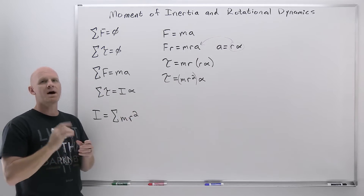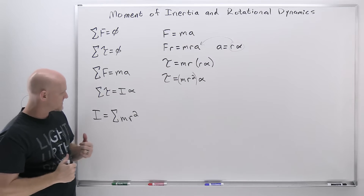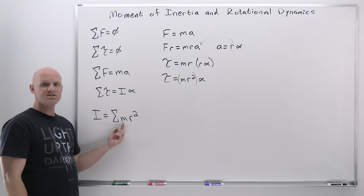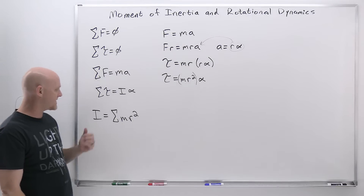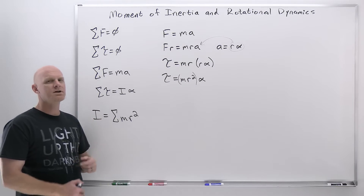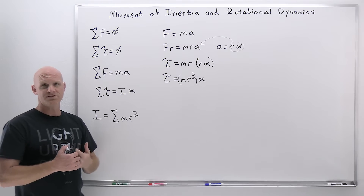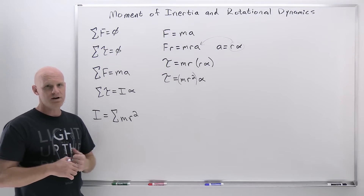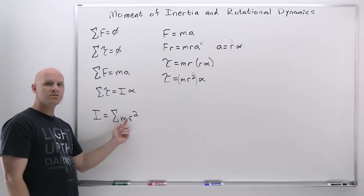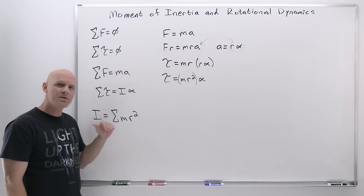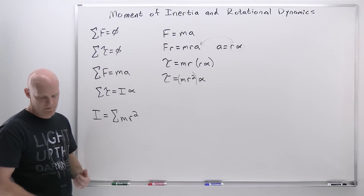The moment of inertia equals the sum of the mr² terms. If you've got a single mass rotating around some axis of rotation, you have a simple equation: mass times radius squared. But if you've got a more complex system of point masses all somehow connected, you just add up every single point mass's mass times its radius squared to get the overall moment of inertia of the system.